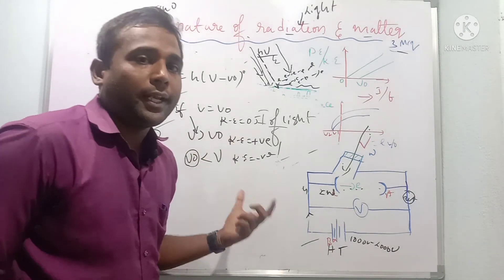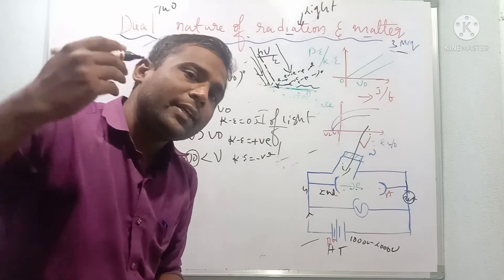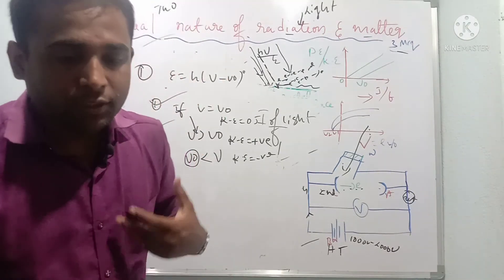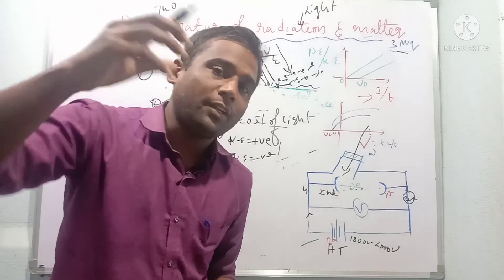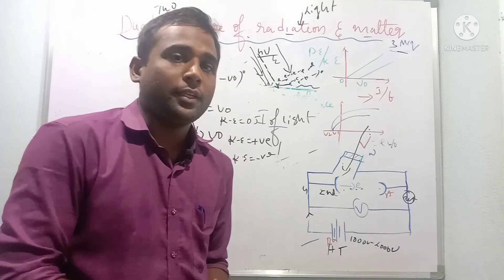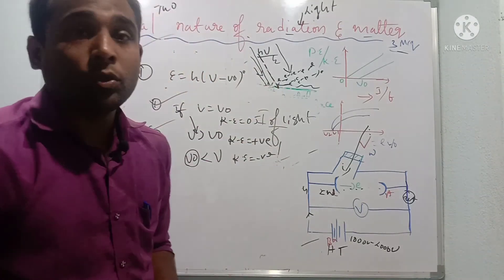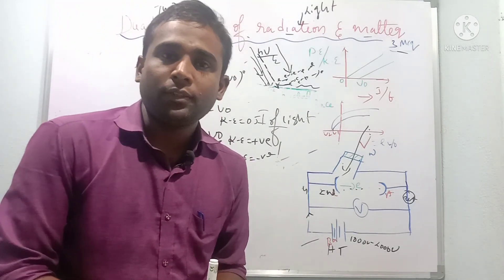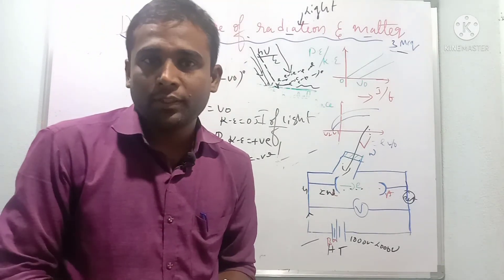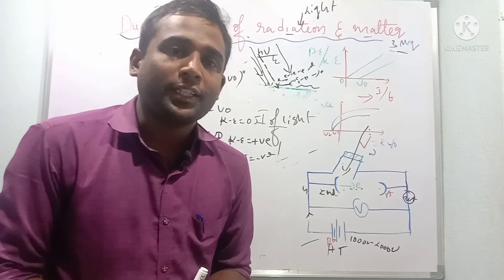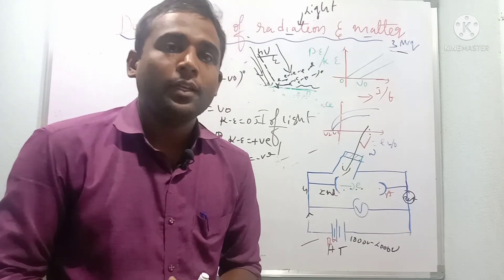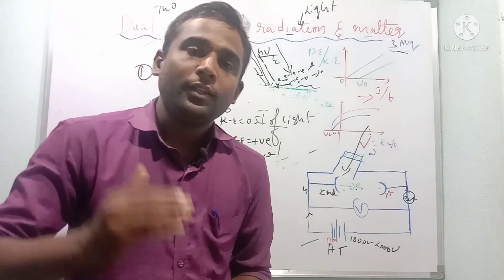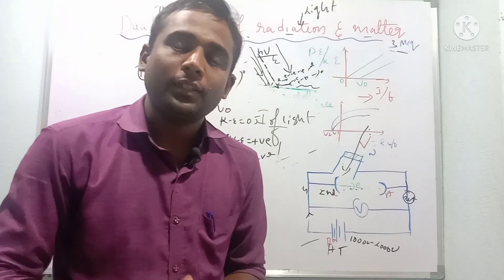To summarize: the number of photoelectrons depends upon the intensity of radiation, and the kinetic energy of the electrons depends upon the frequency of radiation. In this class we discussed electric emission, types of electric emission, and the photoelectric effect in detail. Please support the channel — share and subscribe. Thank you.